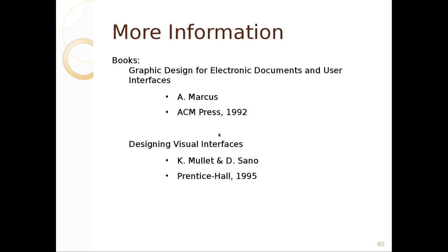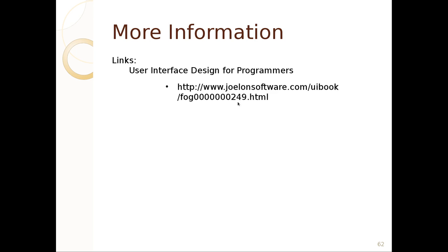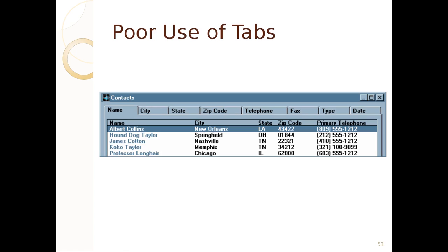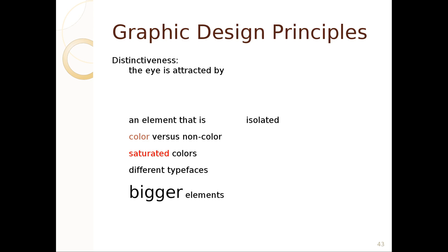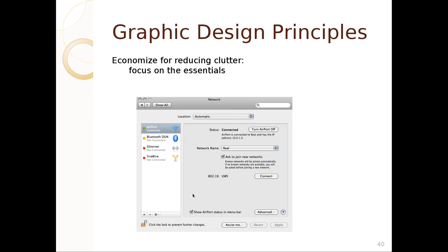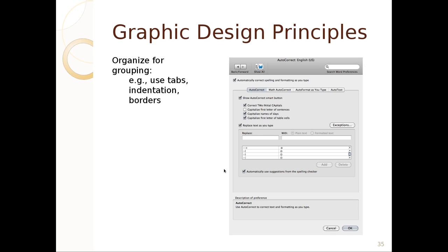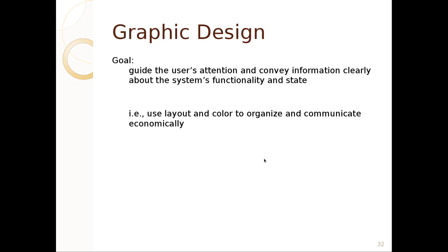For more information, consider these resources: Java Look and Feel guidelines, Interaction Design, Graphic Design for Electronic Documents and User Interfaces, Designing Visual Interfaces, The One-Minute Designer, and Joel Spolsky's writings. To summarize: bad design involves poor visibility, confusing affordances, bad mappings, poor use of visual elements, and inappropriate use of UI elements. Graphic design helps us guide users' eyes, group related things, use indentation, tabs, labels, separators, and proximity, and keep things neat.